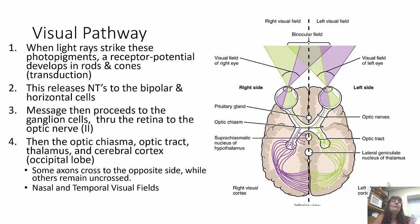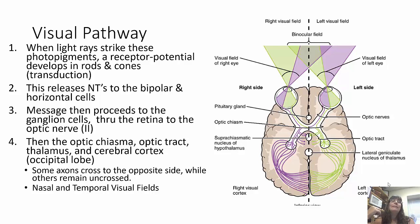The visual pathway: when light rays strike the photopigments, a receptor potential develops inside the rods and cones — this is transduction. That releases neurotransmitters to the bipolar and horizontal cells, which send the message to the ganglion cells, through the retina to the optic nerve (cranial nerve II). Then it goes to the optic chiasma, the crossover point, to the optic tract, to the thalamus (the relay station), and then to the cerebral cortex — specifically the occipital lobe. Some axons cross to the opposite side, others remain uncrossed, creating the nasal and temporal visual fields.